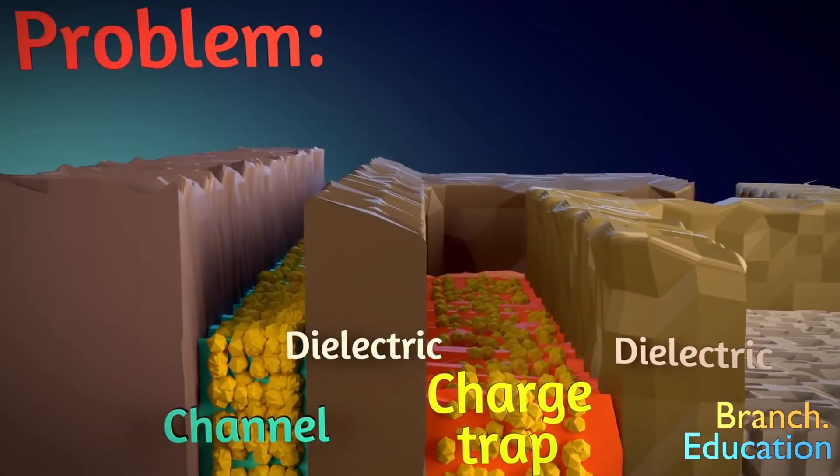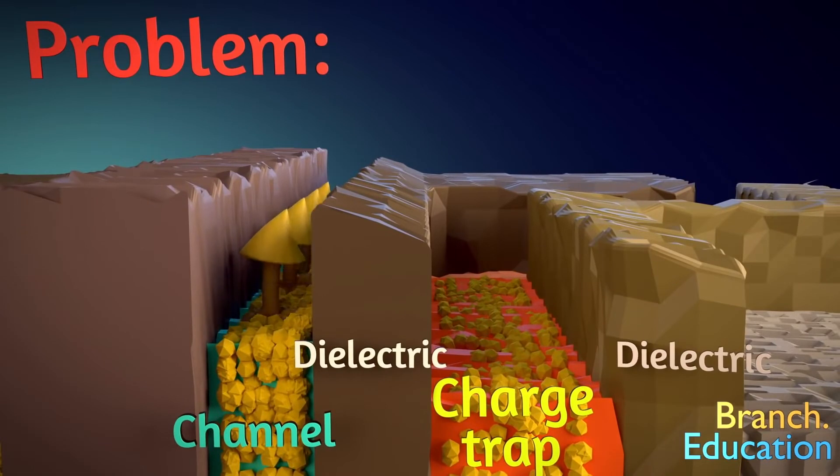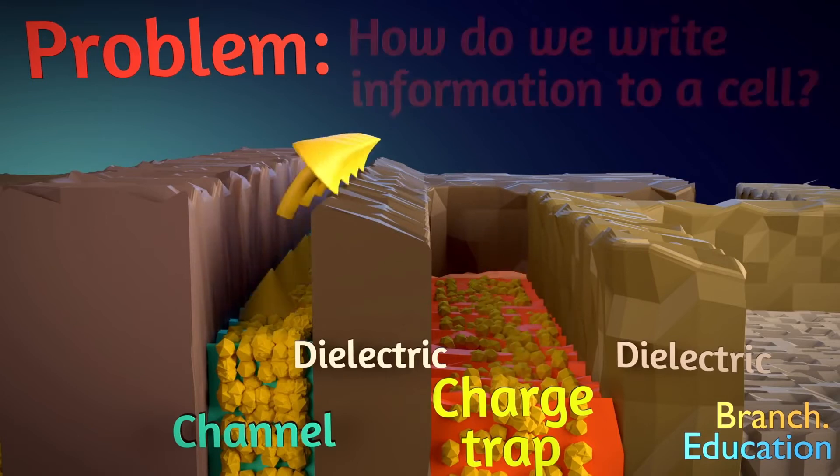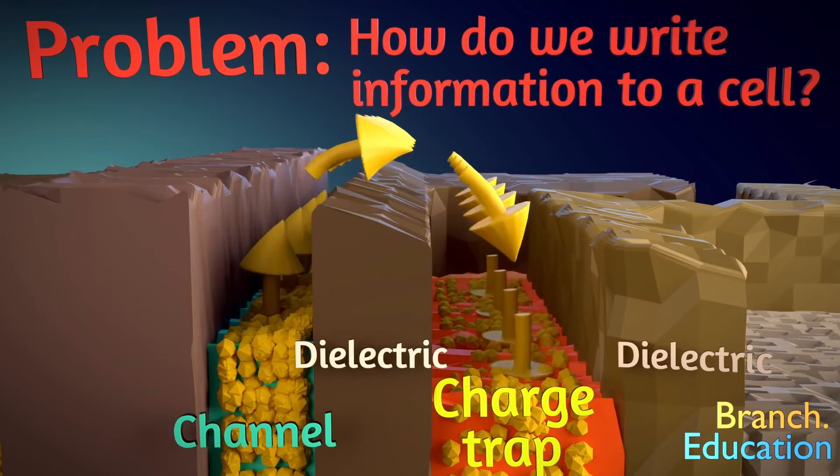But here is the problem. How do we move electrons from the blue channel across the mountain range into the orange charge trap? In other words, how do we write information into a memory cell in our smartphone?